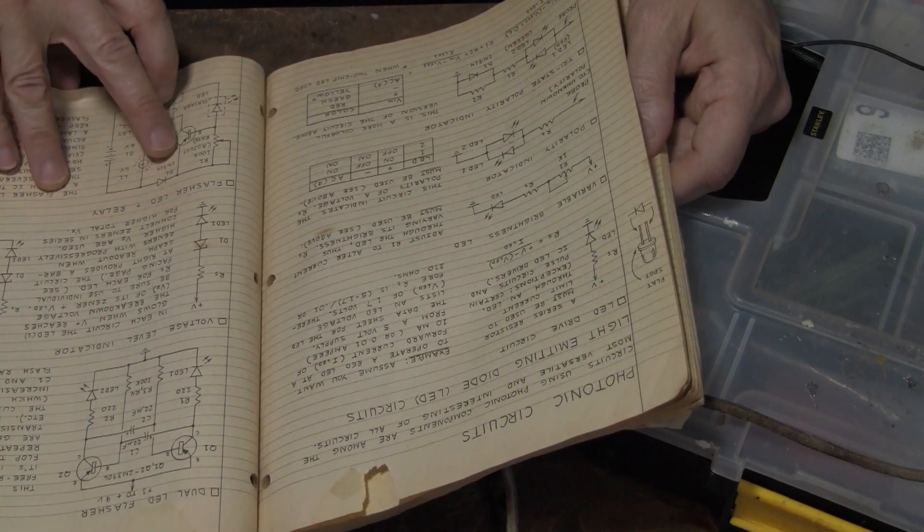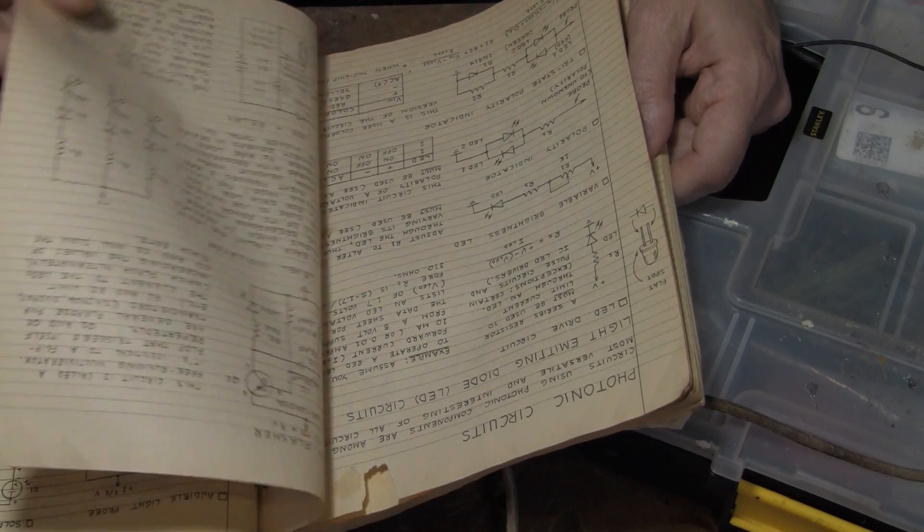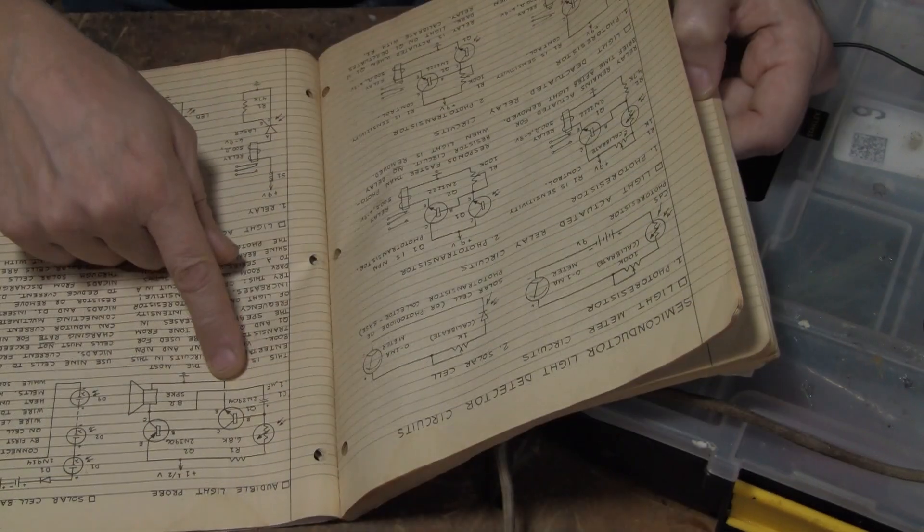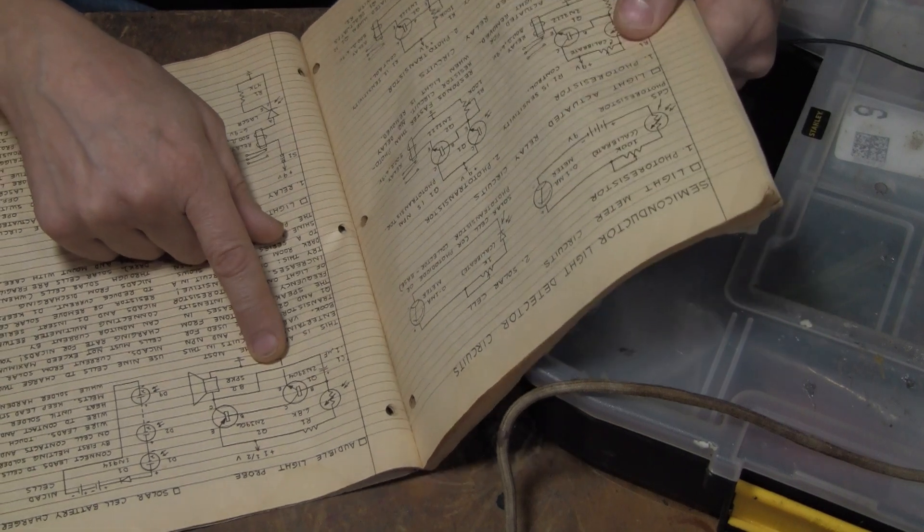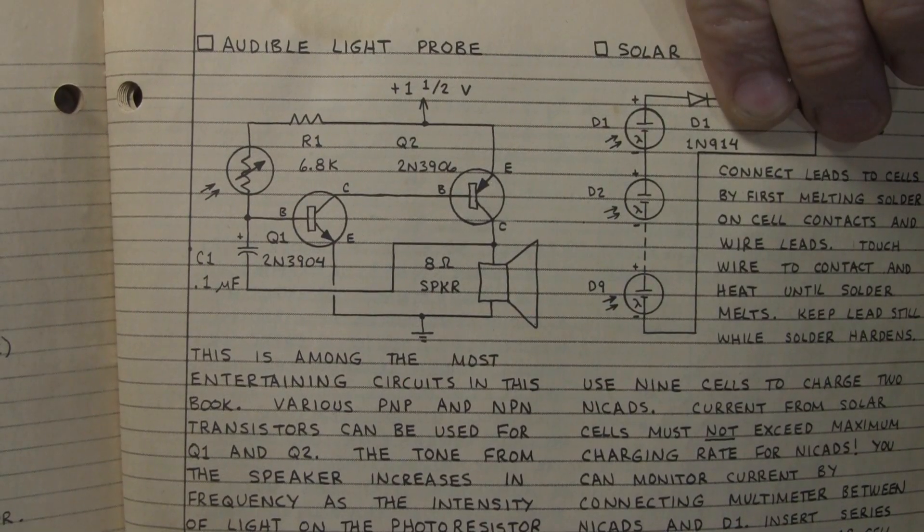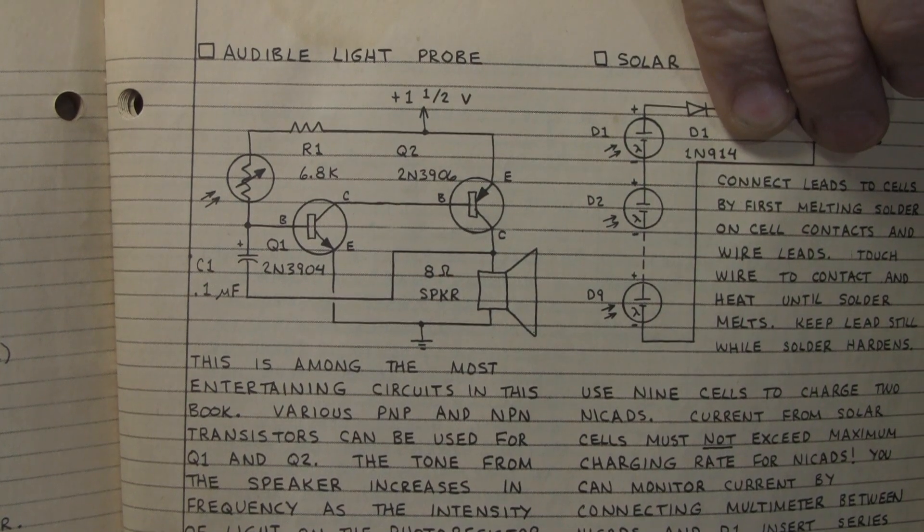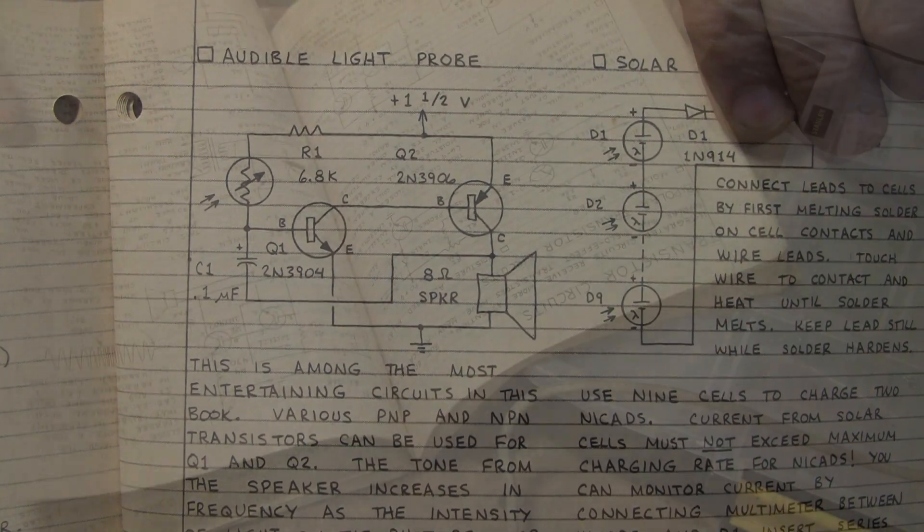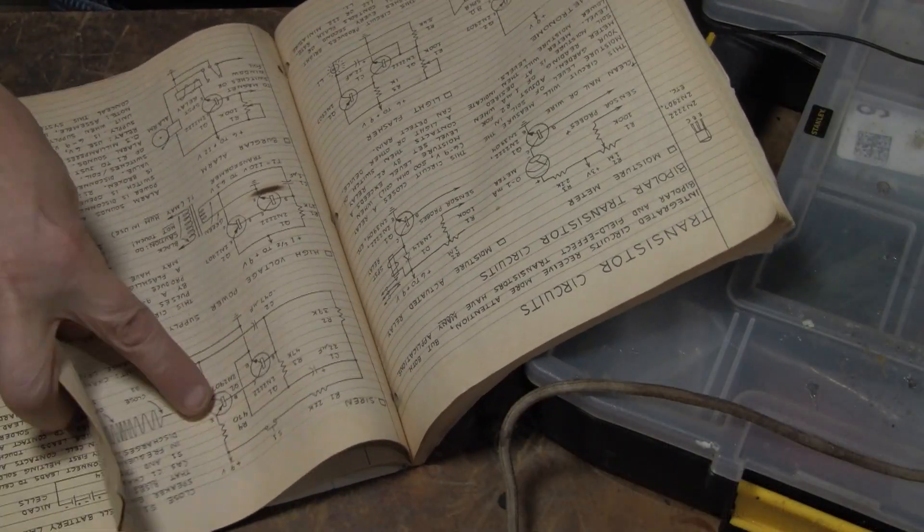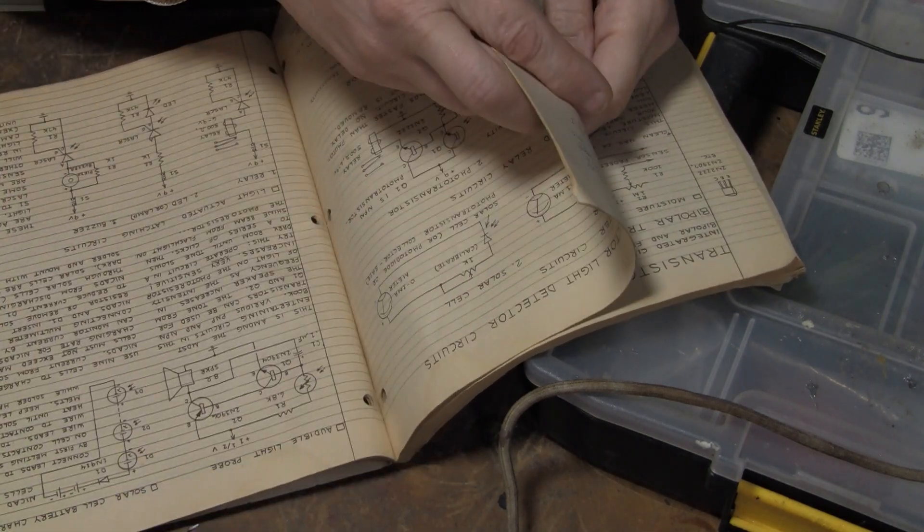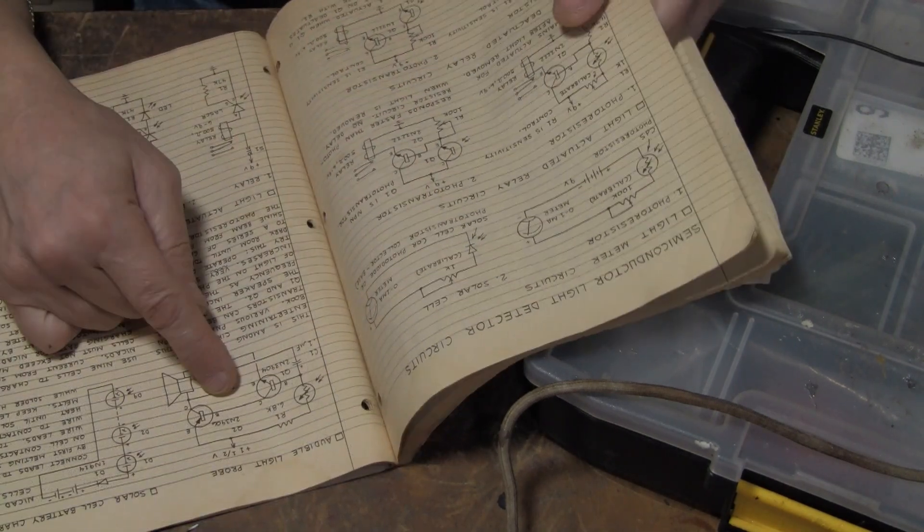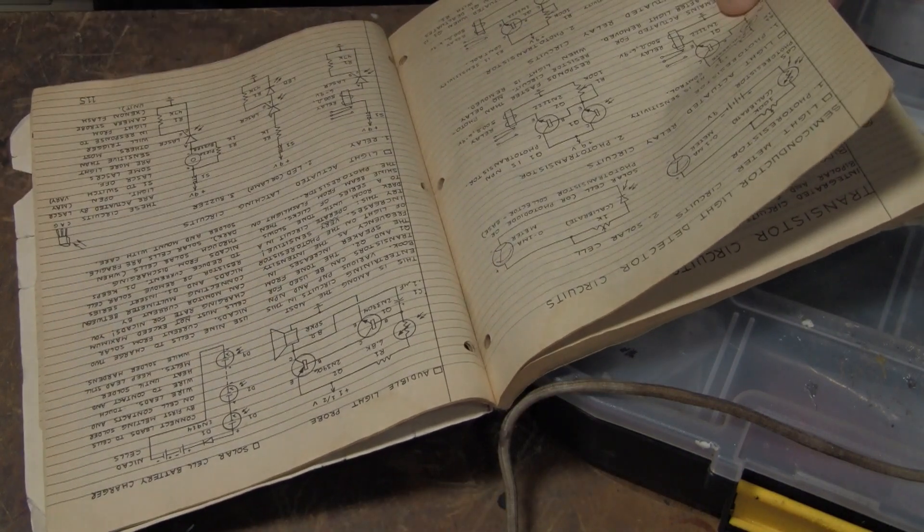Now you get over here to the photo circuits and right here is the audible light probe. And this is pretty much the exact same circuit. It's pretty much the same circuit here. This one and this one. There's different transistors but they're doing the same thing.